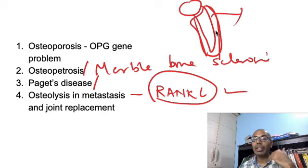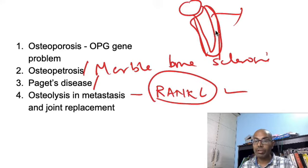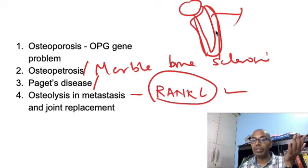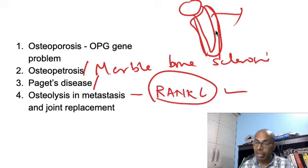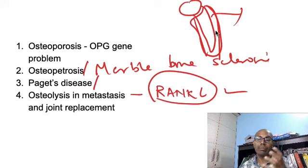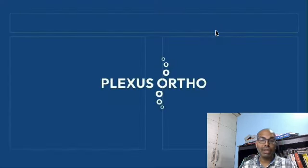To summarize: RANK ligand is released by the osteoblast, attaches to RANK on the osteoclast, and increases bone resorption. Osteoprotegerin is also released by the osteoblast, sequesters RANK ligand, prevents osteoclastic activity, and increases bone formation. You must also know the clinical implications including the drug denosumab and osteolysis occurring in cancer and joint replacement. Thank you very much — this is Dr. Kannan Kumar from Plexus Ortho.